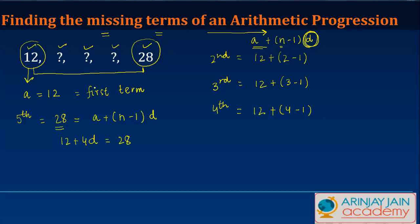Because this is the value that has been given to you. Or 4d is equal to 28 minus 12 which is 16, which gives us a value of d as 4, which is 16 by 4.